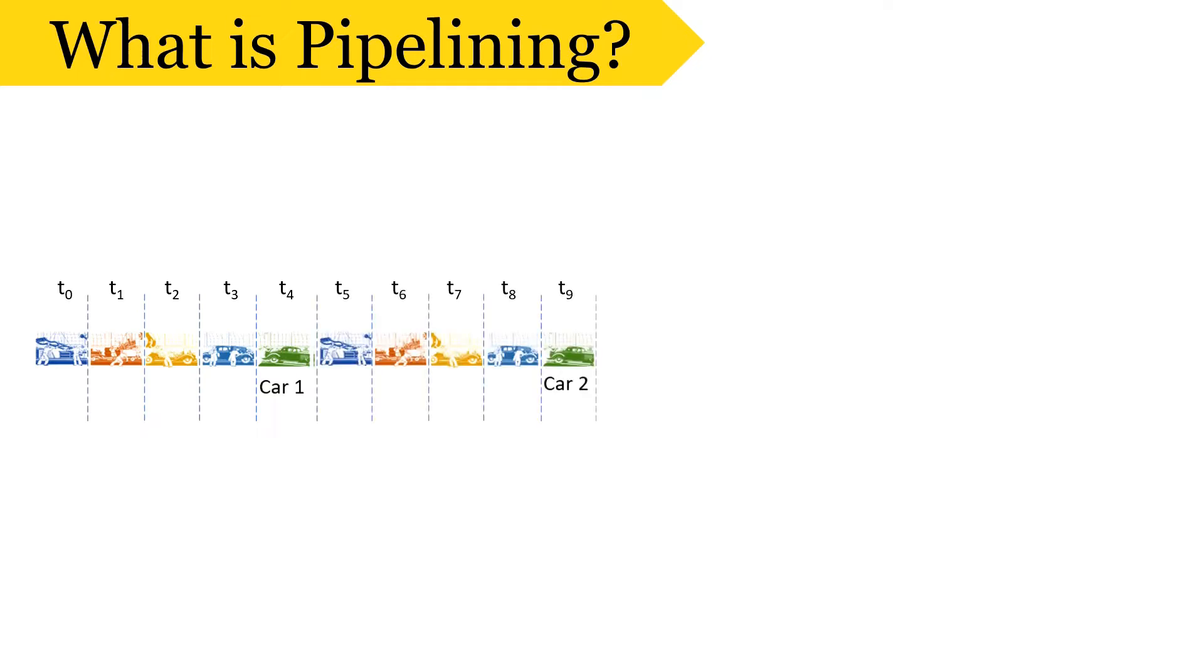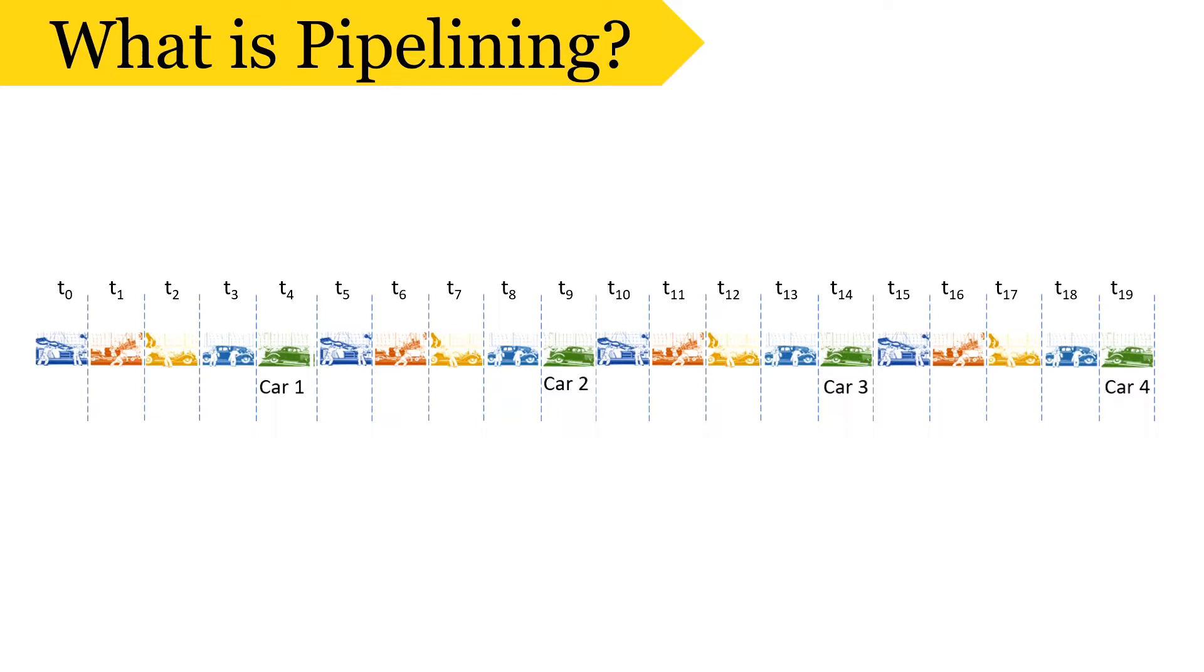Similarly, at time unit T14, they deliver the third car and at time T19, they deliver the fourth car. Now as we know, the process of assembling a car can be divided into 5 substages.